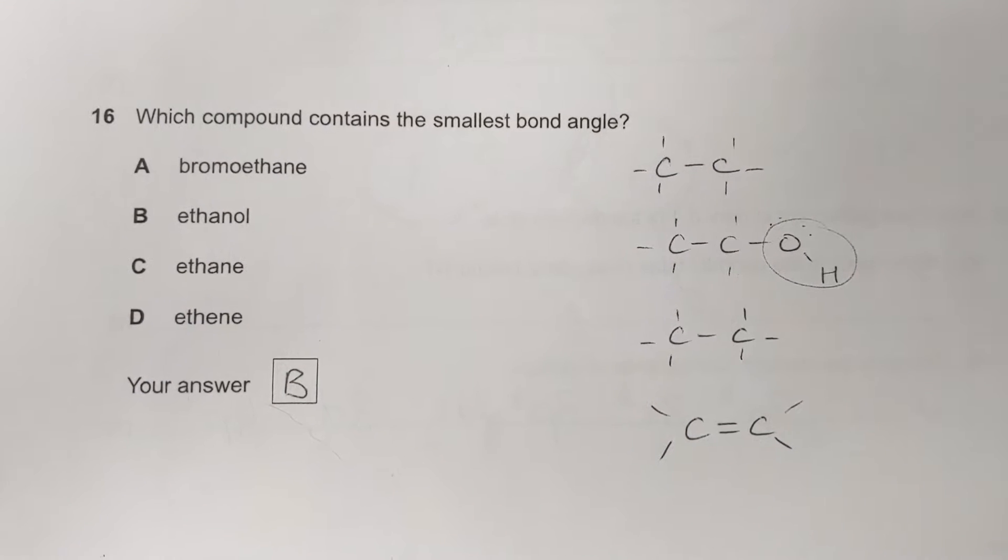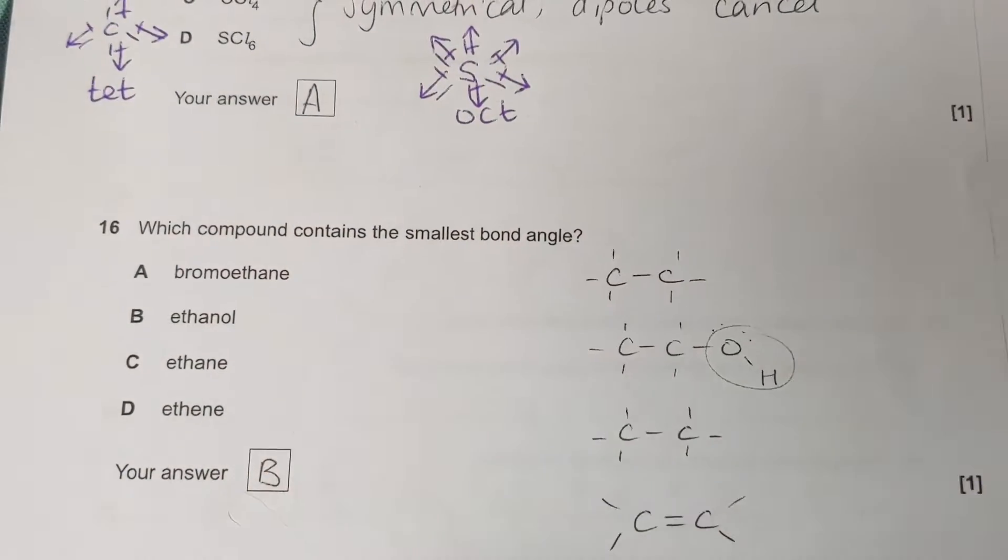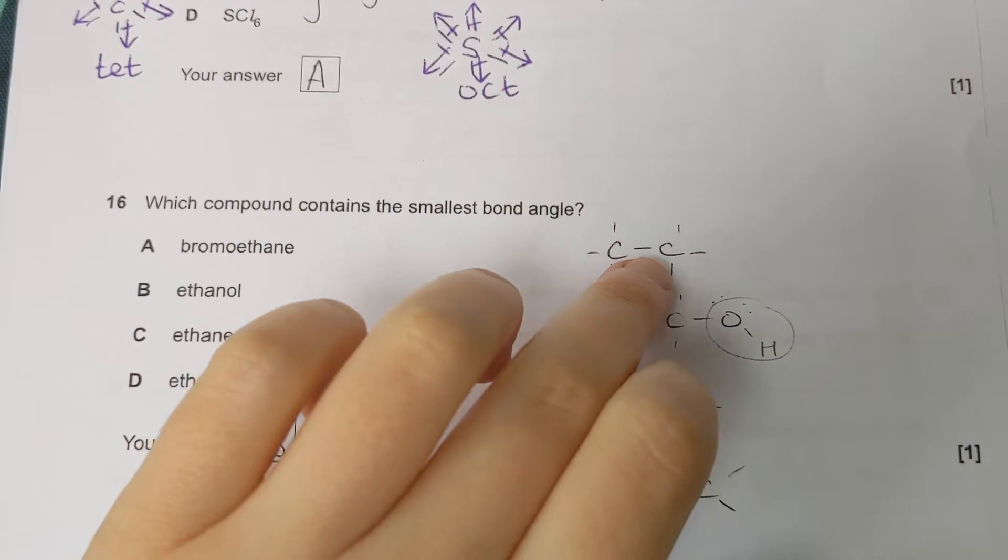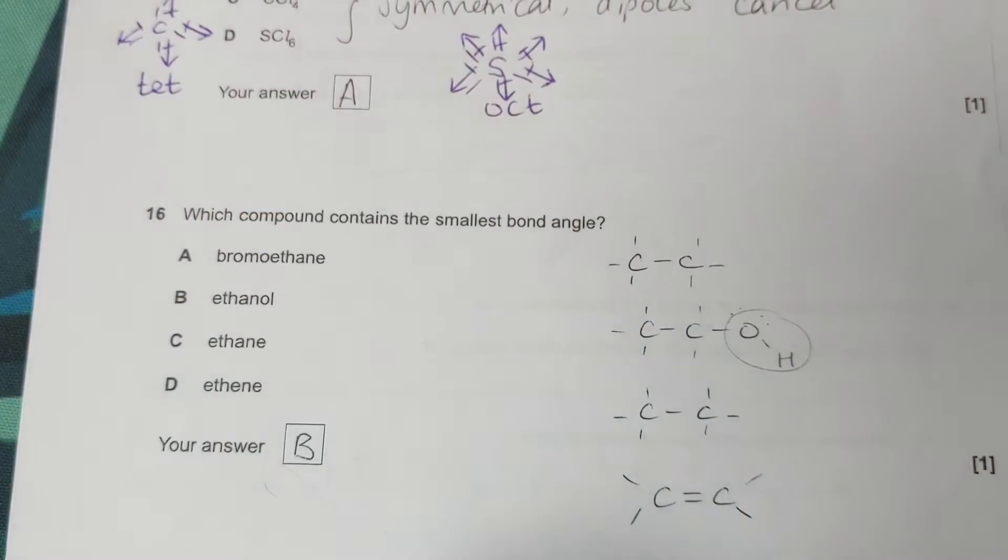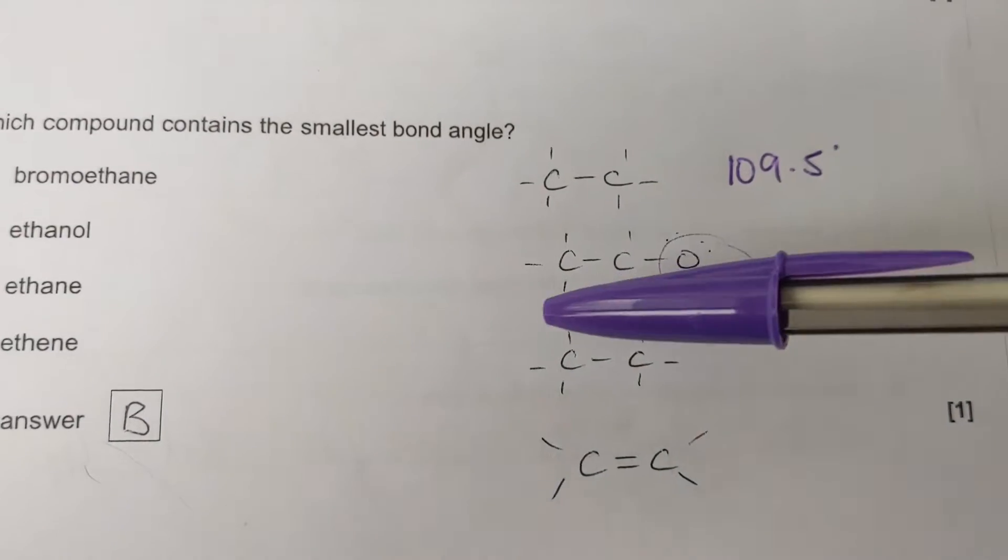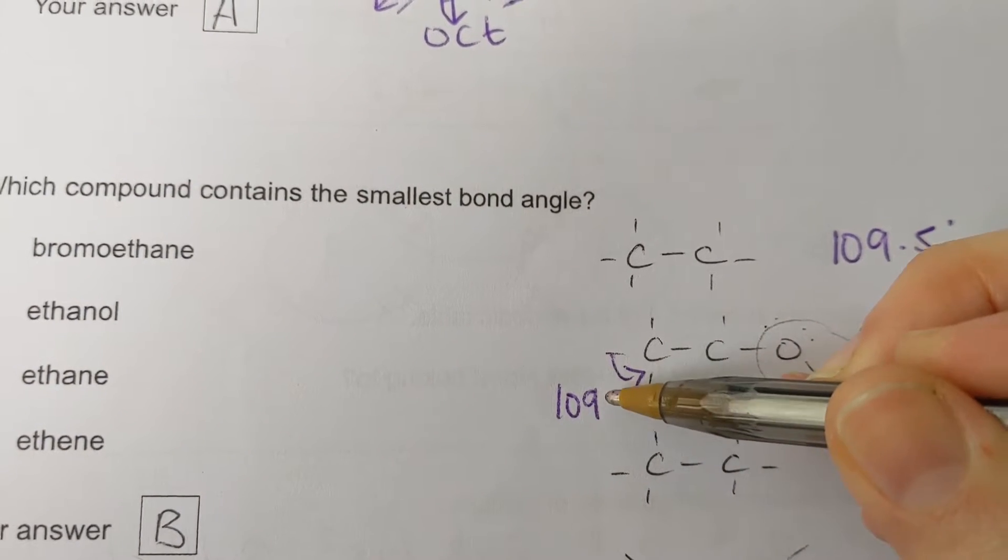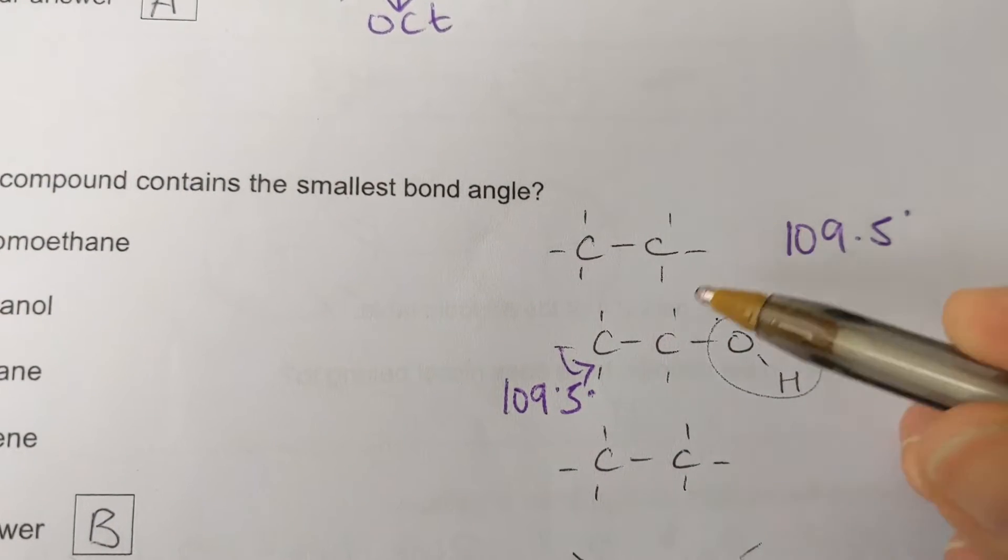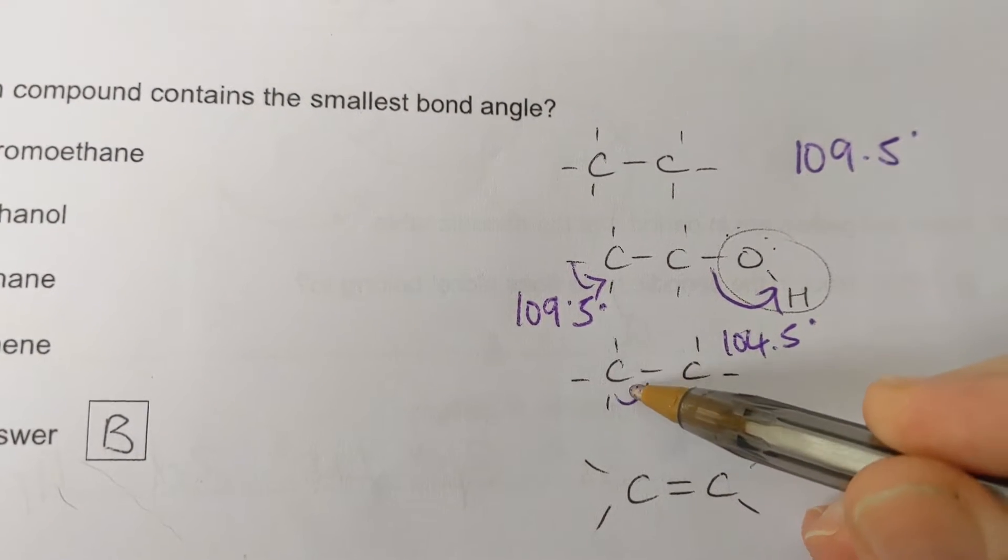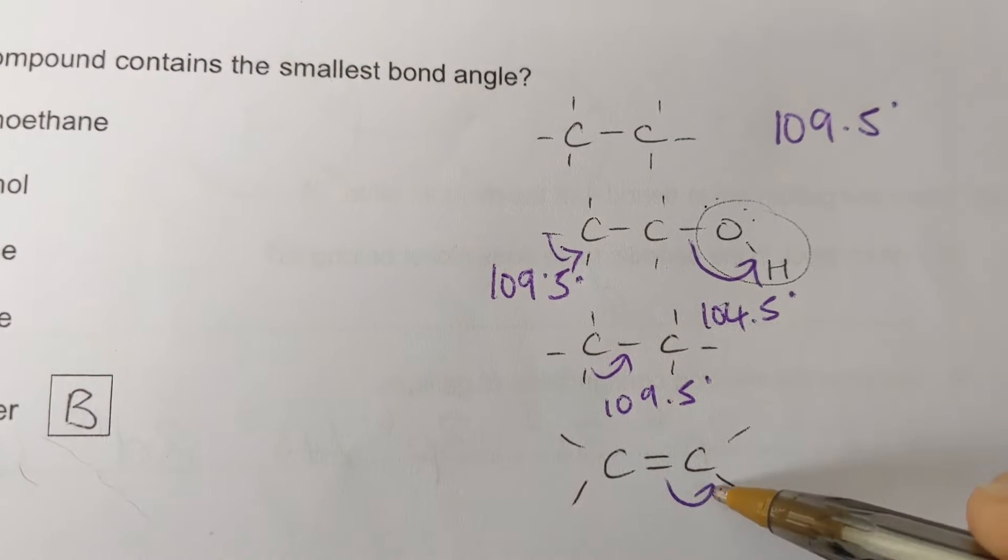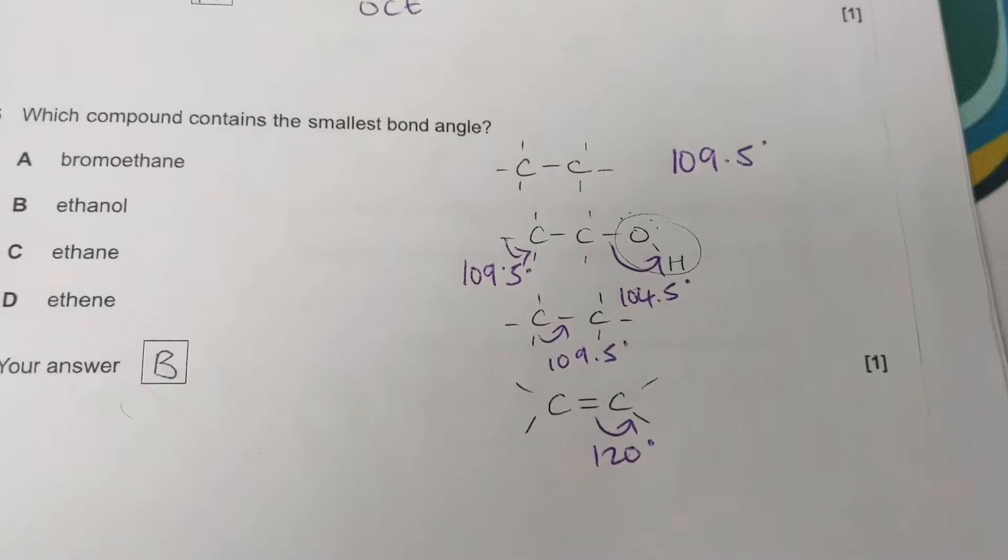Question 16: which compound has the smallest bond angle? I've drawn out the general shapes of these four compounds. I've not drawn the hydrogens on because I'm just trying to get a rough idea. So bromoethane, we can see around these carbons, we've got four bonding pairs of electrons, zero lone pairs, so that's tetrahedral, 109.5 degree bond angles. This one, ethanol, we've got tetrahedral around the carbon atoms, because four bonding pairs, zero lone pairs. But around this oxygen, we've got a bond angle of 104.5 degrees. Around here it's all 109.5 again, and around this one in the alkene, it's 120. So the molecule with the smallest bond angle is ethanol, B, because of this COH.